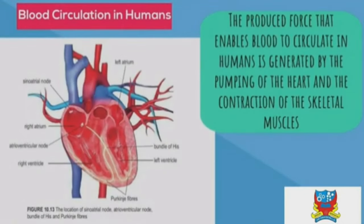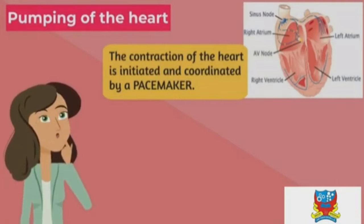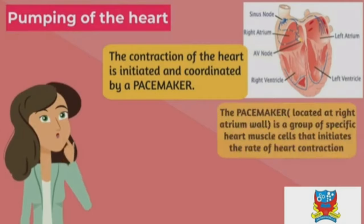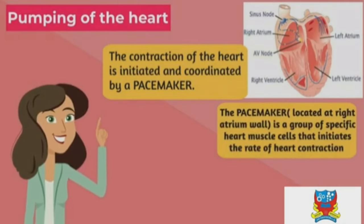The force that enables blood to circulate is generated by the pumping of the heart and the contraction of skeletal muscles. The contraction of the heart is initiated and coordinated by a pacemaker located at the right atrium — a group of specific heart muscle cells that initiates the wave of heart contraction.